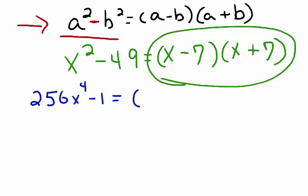Again, I know I have two perfect squares. 256 is a perfect square. So is x to the fourth. And one is a perfect square. I set up my parentheses. Put a minus sign in one and a plus sign in the other. And then I take the square roots of each term and plug them in. 16x squared minus one times 16x squared plus one.